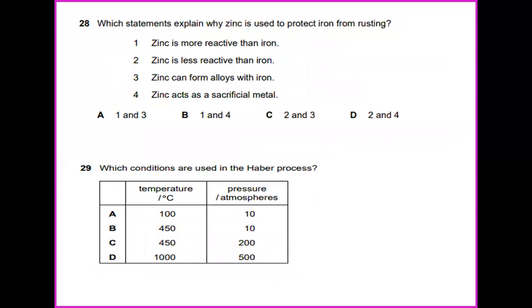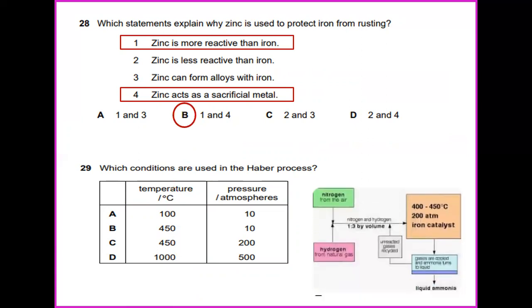Zinc coating is used to protect iron from rusting because zinc is more reactive than iron. That is the answer. And zinc acts as a sacrificial metal. So the answer would be B. Which conditions are used in the Haber process? If you look at the Haber process, the temperature required is 400 to 450 and the pressure in atmospheres is about 200. So the most suitable answer for number 29 is C.